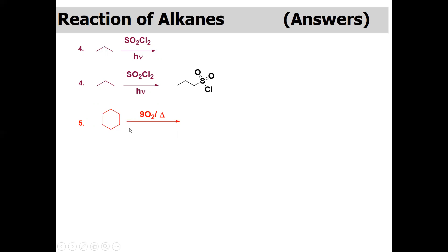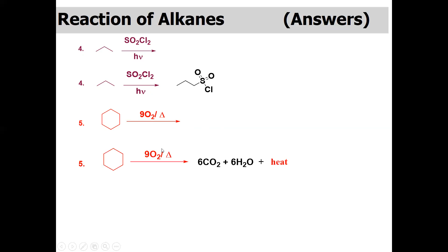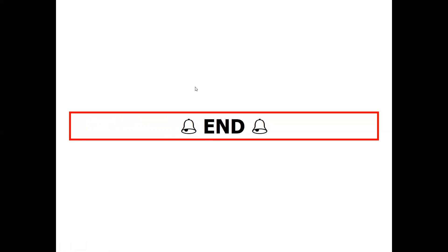The last reaction is the combustion reaction. In the presence of oxygen and heat, any alkane or cycloalkane converts to carbon dioxide and water. For cycloalkane, the number of carbon atoms gives the same number of CO₂ molecules and the same number of water molecules. For an aliphatic alkane, one additional water molecule is produced. For cyclohexane (six carbons), the products are six CO₂ molecules and six water molecules.